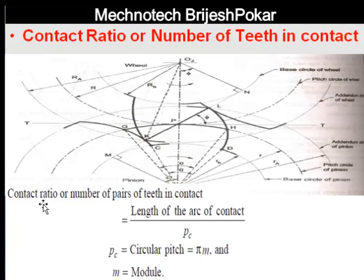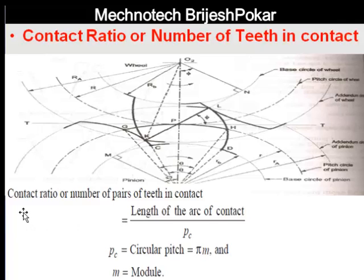One more thing is the contact ratio. The contact ratio means the number of teeth in contact at the same time. It is the length of arc of contact upon PC, where PC is the circular pitch and is equal to π times module. So the contact ratio equals the length of arc of contact upon the circular pitch PC.